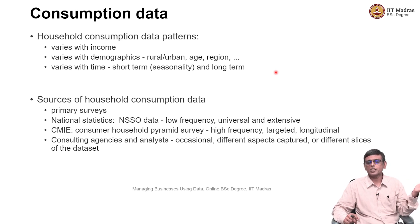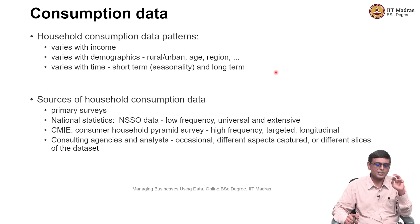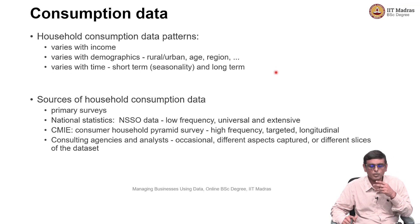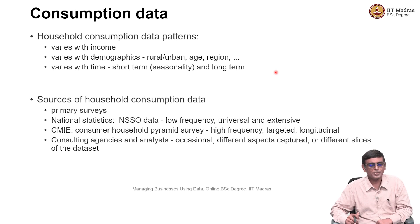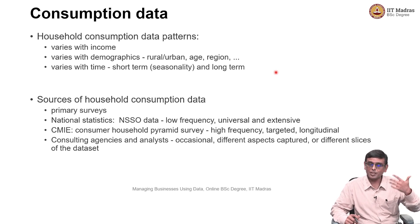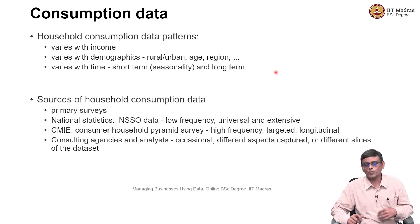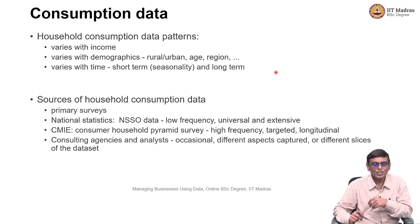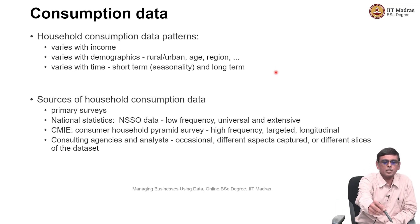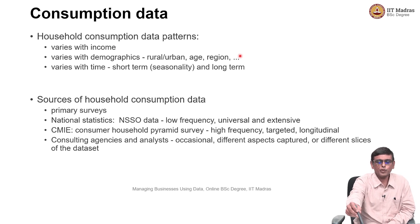Like somebody owns a house and somebody does not, so he has to pay rent. Do they own a vehicle, which means some different consumption patterns? Do they eat out or do they make food at home? Whether they are young or old — if they are young, maybe they eat out more; if they are old, maybe they cook at home. So basically, household consumption patterns vary with income, with demographics, and also with time.